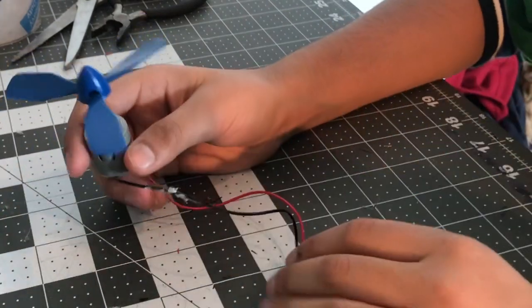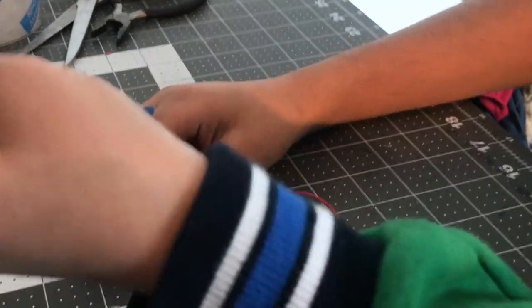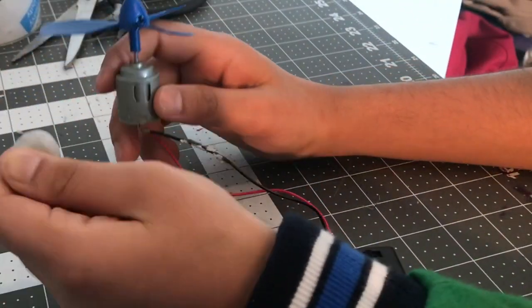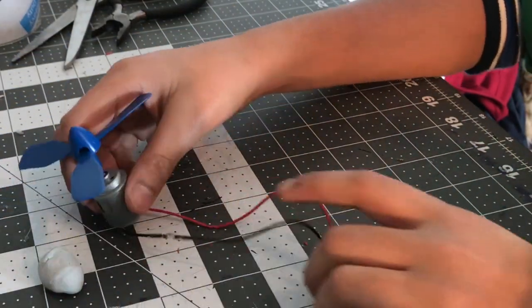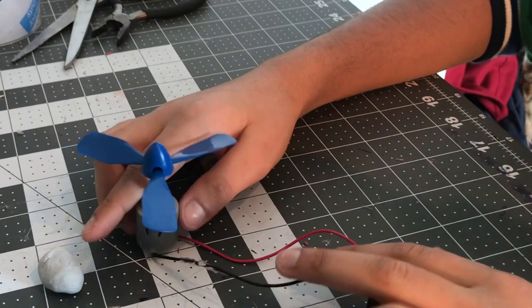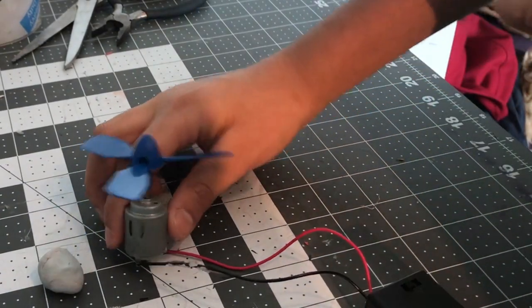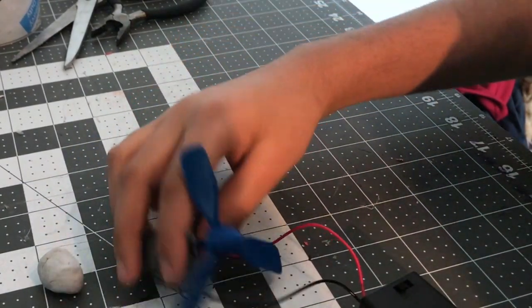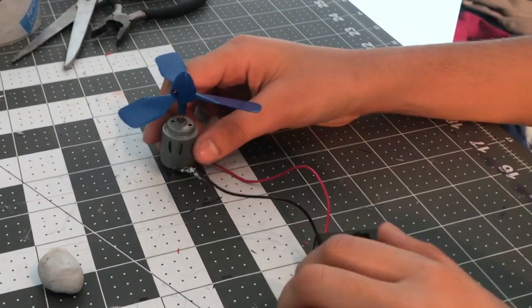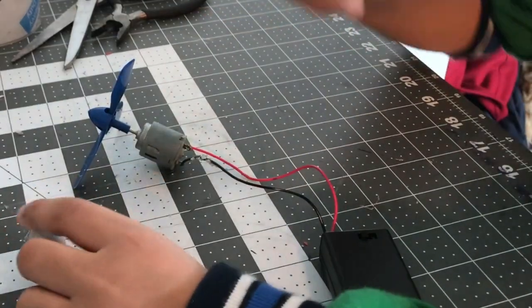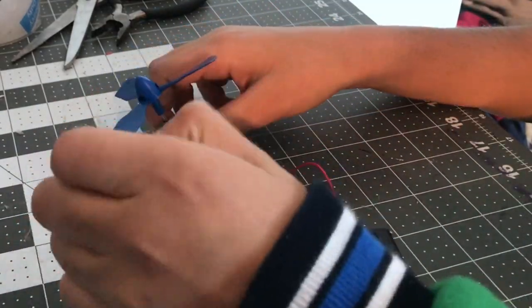So, I'm just going to now attach some sticky tack to the bottom. And what this is going to do is I want to make a stable base. Because right now, the drone is just sitting like this, and then the second I let go, it'll fall over. So I don't want it to fall over anymore. So what I'm going to do first is I'm going to do times two speed and attach this.